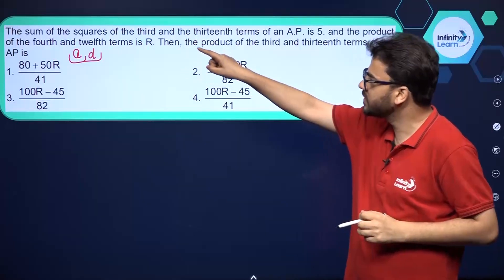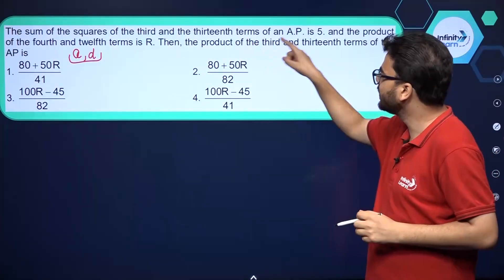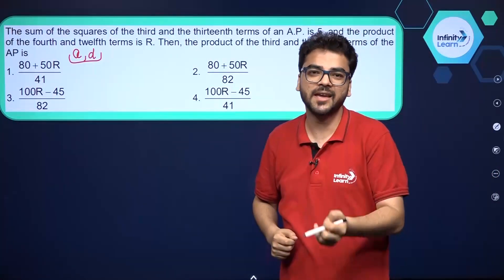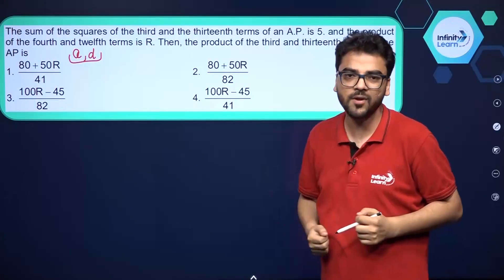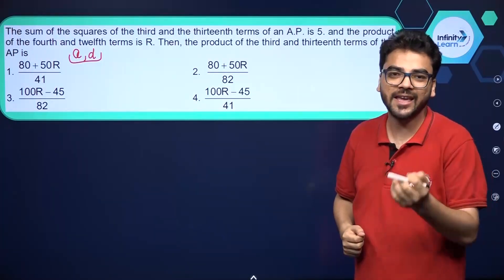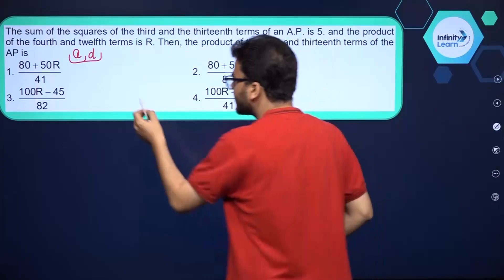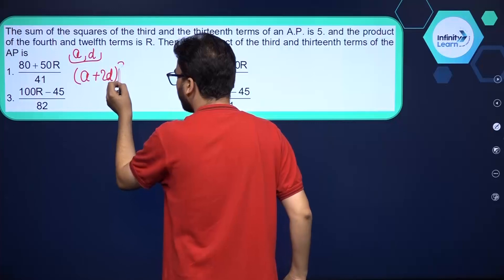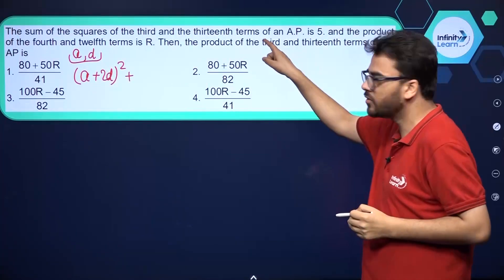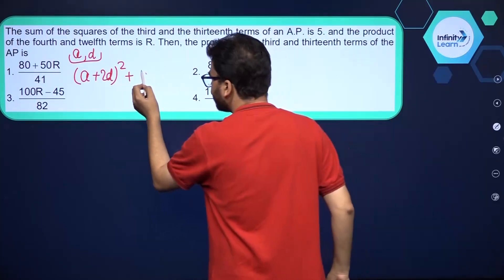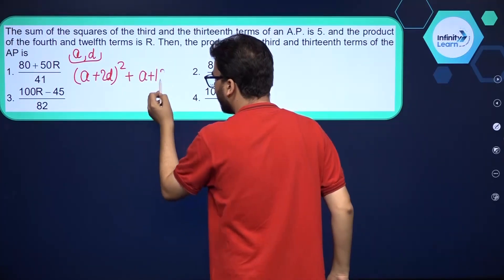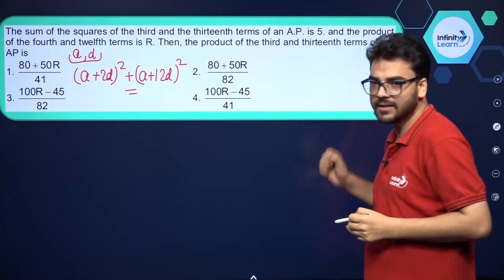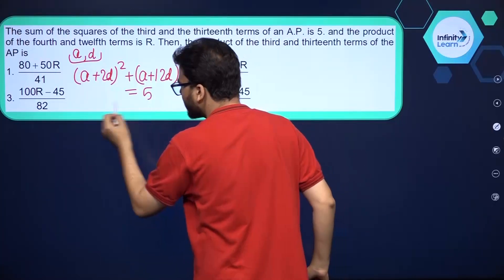The sum of the squares of the 3rd and 13th terms is 5. The nth term of an AP is A plus (N minus 1) into D. So the 3rd term will be A plus 2D, and the 13th term will be A plus 12D. So we have: (A + 2D)² + (A + 12D)² = 5. We need to expand these brackets using the (A + B)² formula.